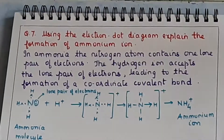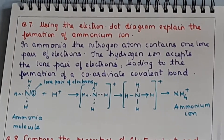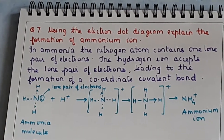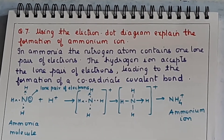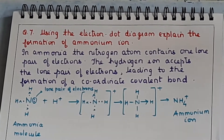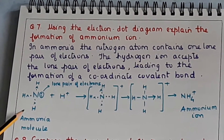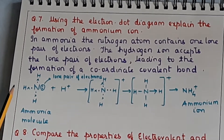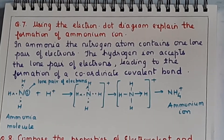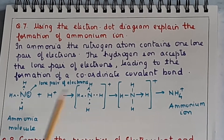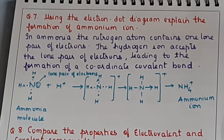You may be asked directly to draw the electron dot structure to show the formation of the ammonium ion, or to show the formation of the ammonia molecule and hence the formation of the ammonium ion. If formation of ammonia is also asked, show it with the plus sign as done before in covalent bonding, then continue to show the ammonium ion. The ammonium ion and hydronium ion are five-star questions - very very important.